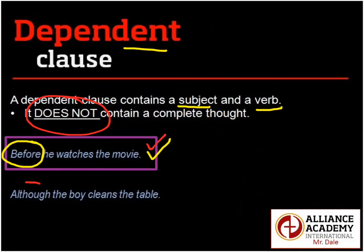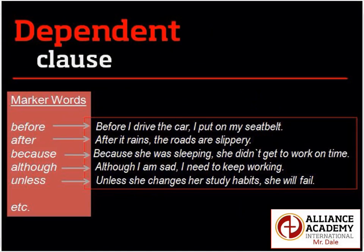A dependent clause always begins with one of these marker words. Here's a short list: before, after, because, although, unless, and many more. These are called subordinating conjunctions — that's a fancy term for the marker words that identify a dependent clause. A dependent clause cannot stand alone; it always needs to be with an independent clause.